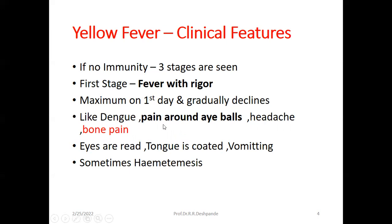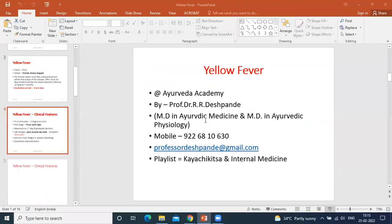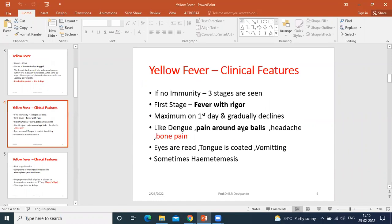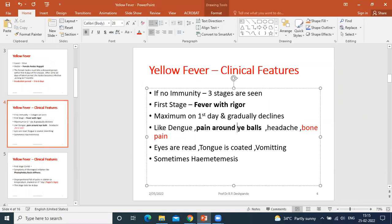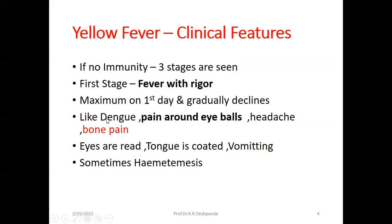Like dengue, there is pain around the eyeballs. There is also headache and bone pain. Eyes become red. The tongue is coated. Vomiting may be seen, sometimes with blood — hematemesis. Vomiting with blood is called hematemesis.